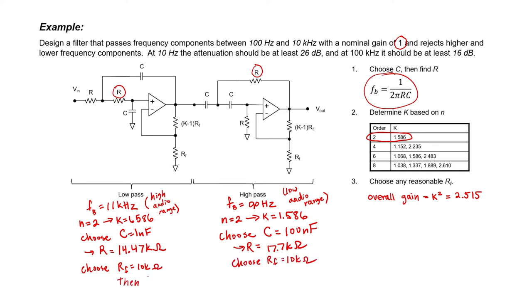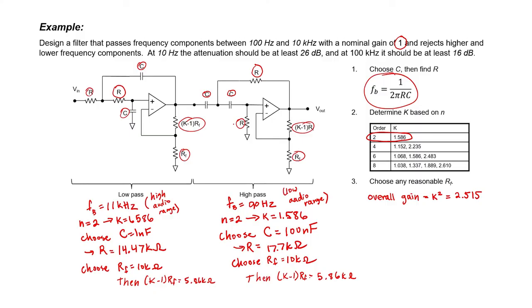Then our other feedback resistor ends up being 5.86 kOhms, and it ends up being 5.86 kOhms on the other side as well. Thus we've calculated now all of the components in the circuit. So the filter is fully designed. It would work as desired except that the DC gain is at the wrong level. The filter that we've just designed has a DC gain of 2.515, but the problem calls for a filter with a DC gain of 1.